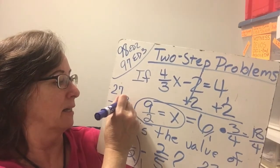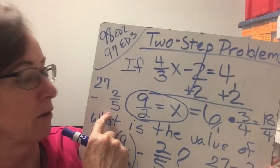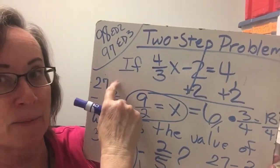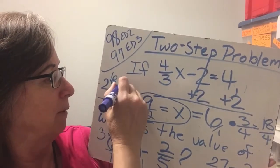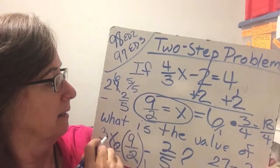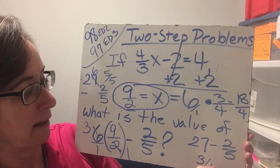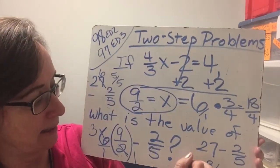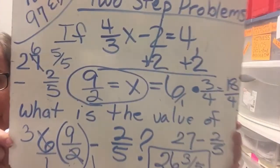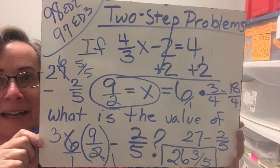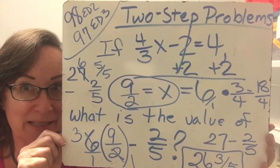27 minus 2 fifths, let's put it in our vertical form. Remember when we have something in the vertical form, we have to get something fifths up here. So remember, we borrow here or rename and we make this one 5 fifths. Do you remember that? So now we have 5 fifths minus 2 fifths is 3 fifths. And then 26 and 3 fifths. And there is our third example. And it's time for us to do some practice problems.